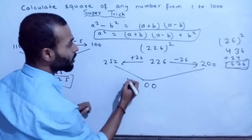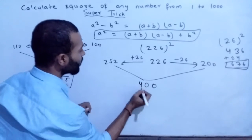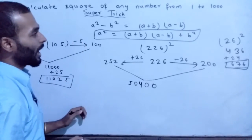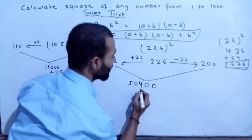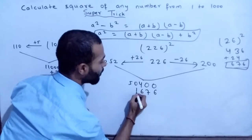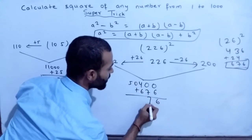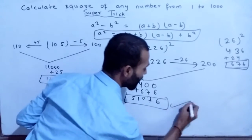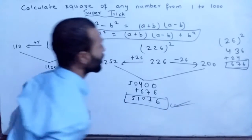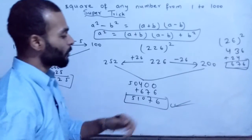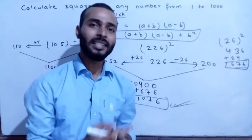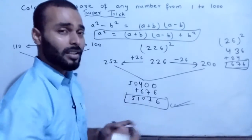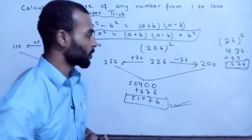Adding 50,400 plus 676 gives 51,076. So the square of 226 is 51,076. With practice, you can easily solve any squaring question. I will give you another example as well.